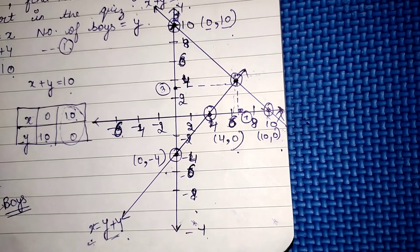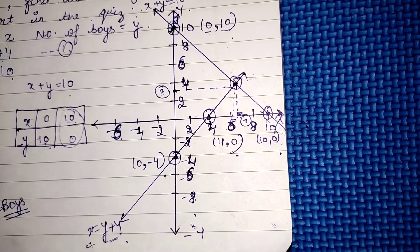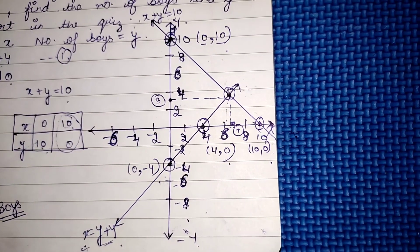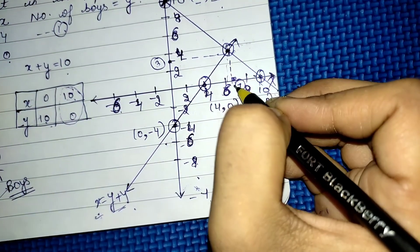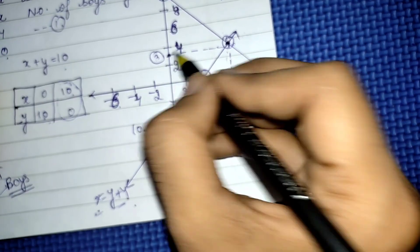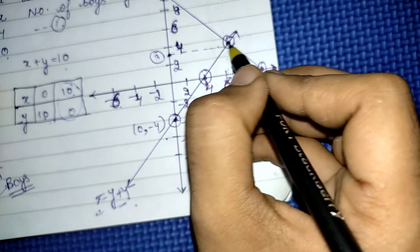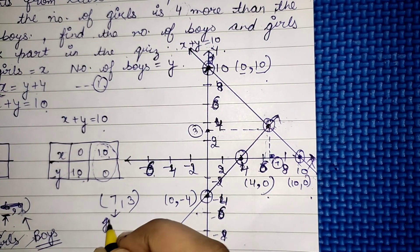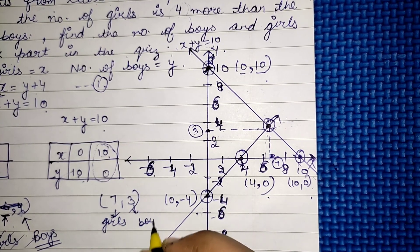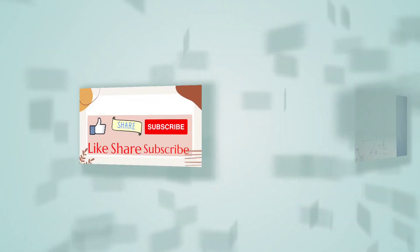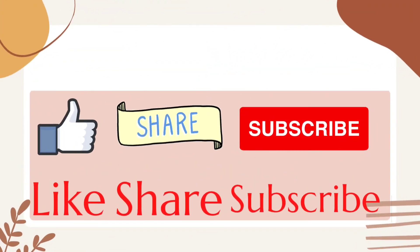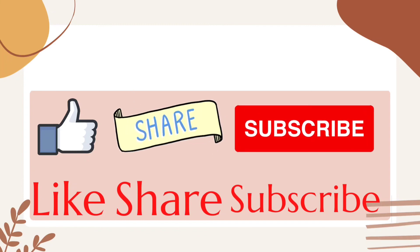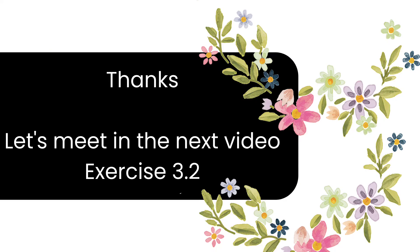From the graph, the lines intersect at the point (7, 3). Since x represents girls and y represents boys, the number of girls is 7 and the number of boys is 3. If you find this video useful, please like, share, and subscribe so you can get updates on new videos. In the next video we will solve more questions of exercise 3.2.